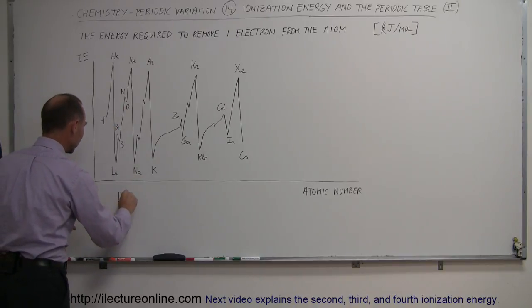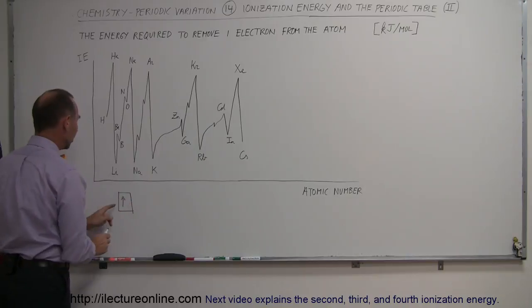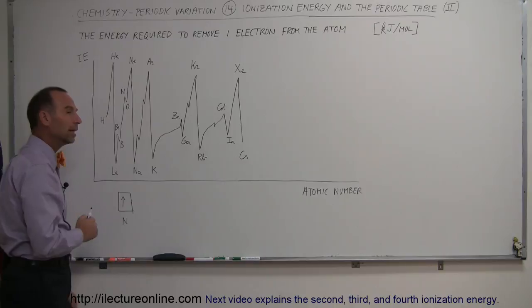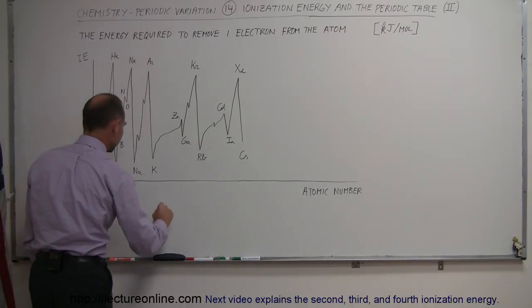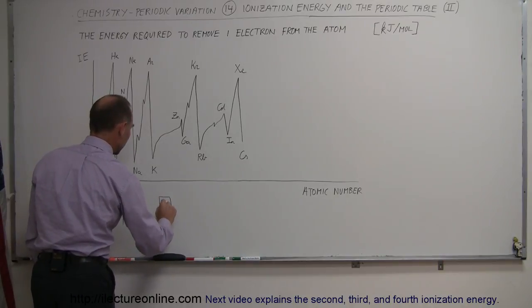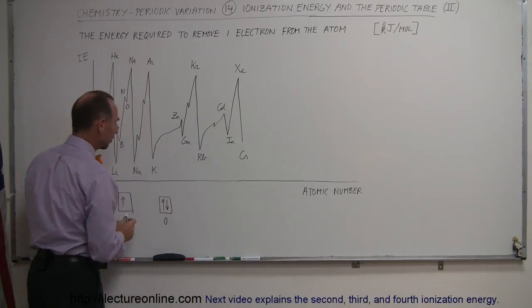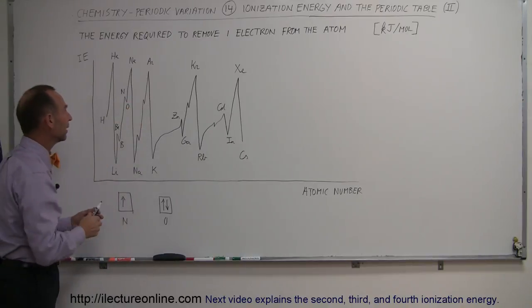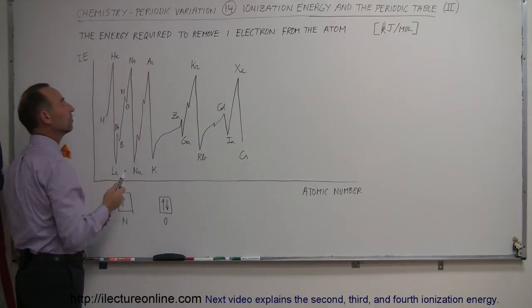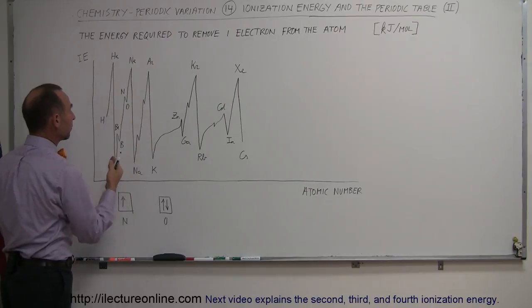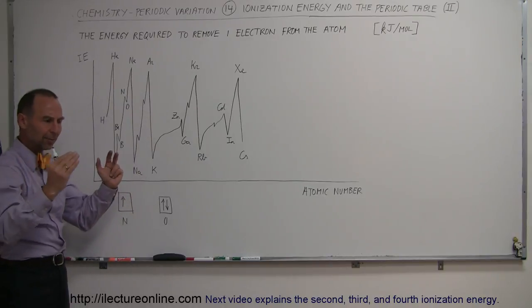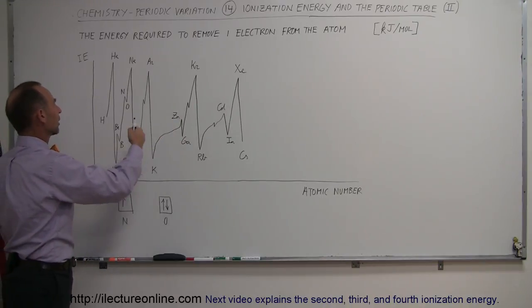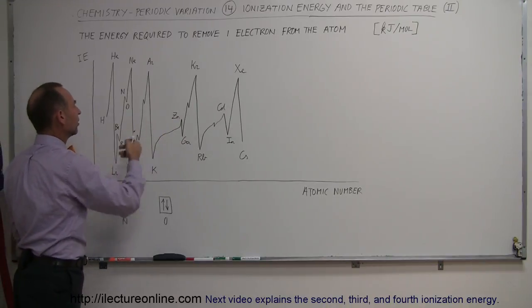To illustrate: for nitrogen, each of the three P-orbitals has just one electron. For oxygen, one of the P-orbitals has two electrons, and it's therefore easier to remove that second electron, so the ionization energy drops just a little bit. Then it continues to increase until we get to neon, because in period two the atoms get smaller and smaller, the attractive forces get larger, and it becomes more difficult to remove an electron as we go from left to right.